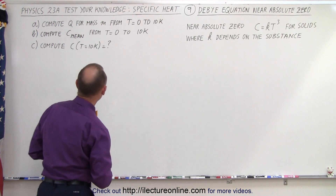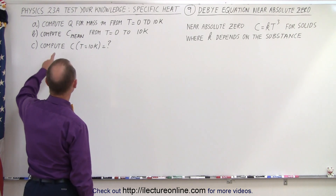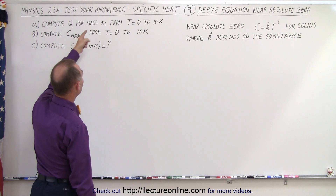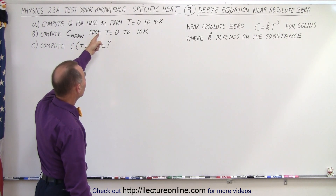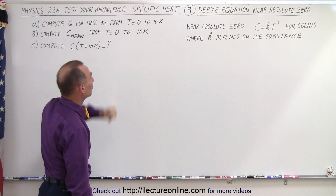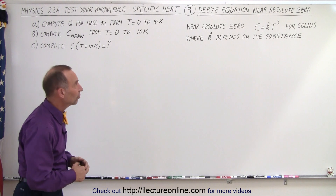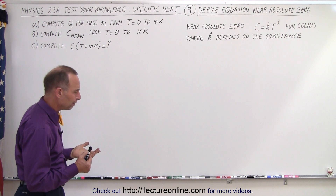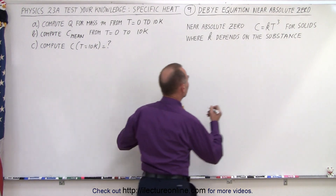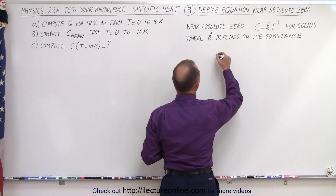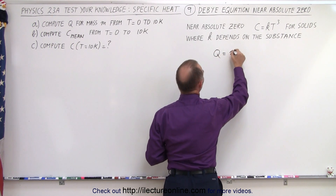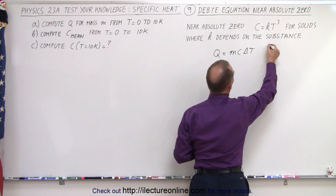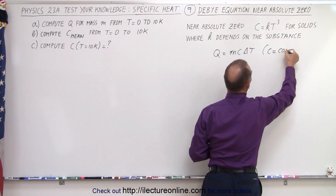So based upon that, let's try to find Q, the amount of heat required for a mass m, when the temperature changes from T equals 0 to T equals 10 K. We use the equation Q = M·C·ΔT, and of course that is when C is equal to a constant.